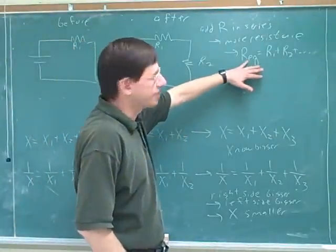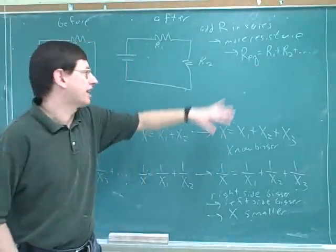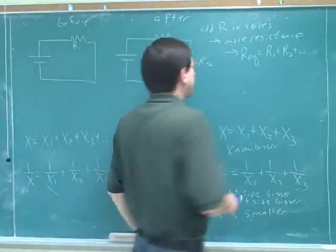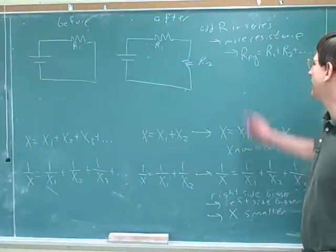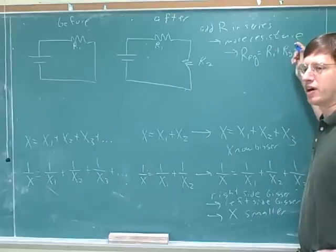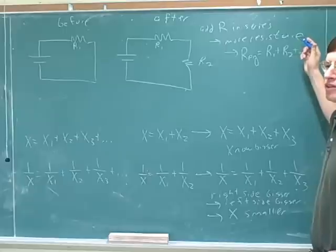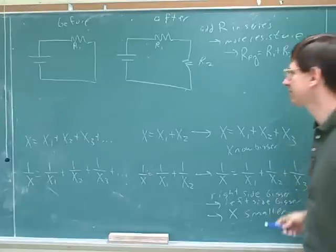This total resistance is called the equivalent resistance. If there were five resistors, R equivalent would be R1 plus R2 plus R3 plus R4 plus R5. That's why we use the dot notation to indicate you add as many terms as needed.